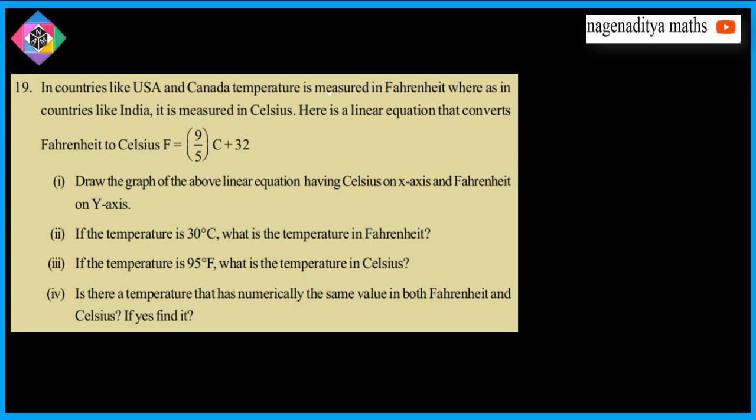Here is a linear equation that converts Fahrenheit to Celsius: F is equal to 9 by 5 into C plus 32.